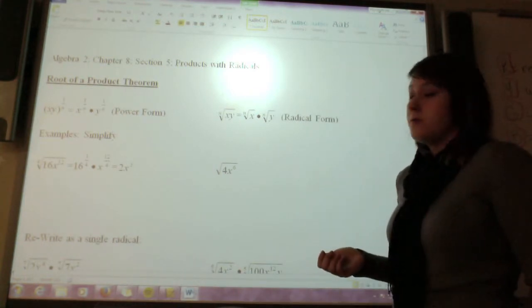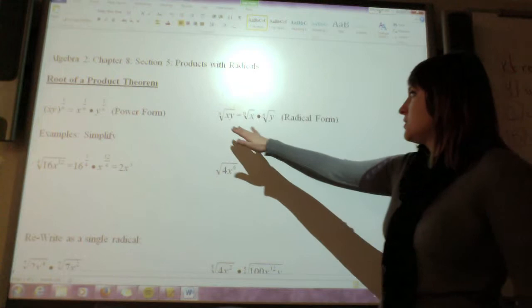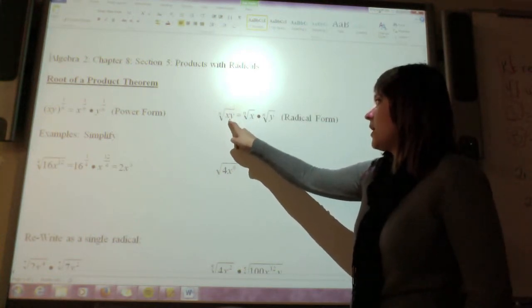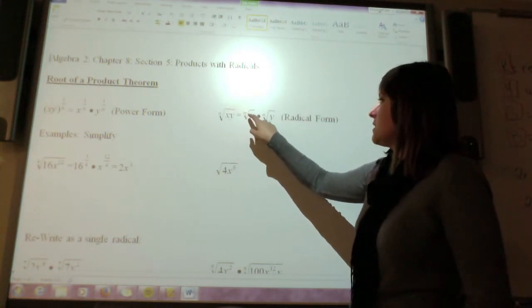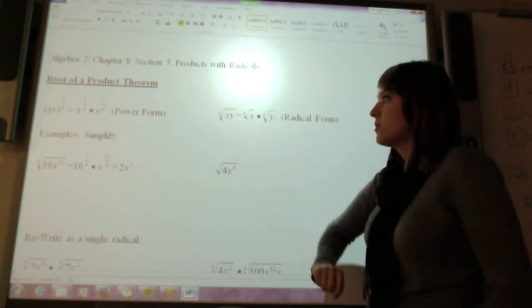In the radical form, we can change it the same way. So again, you've got that x times y underneath that root. That's the same thing as splitting it up into two separate roots.